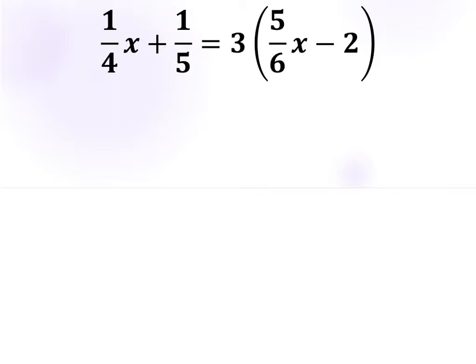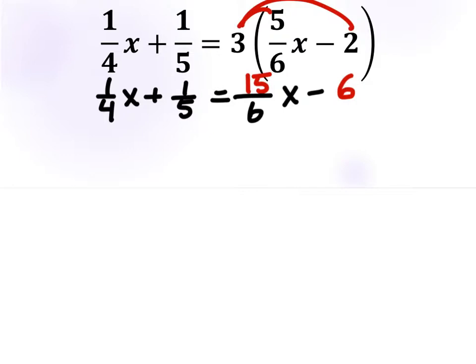The first thing we need to do in this problem is to distribute the three. I'm just going to use these distributive rainbows, which just indicate that we're multiplying here. And after distribution, of course, 3 times 5 is 15, and 3 times 2 is 6. Now we would consider this a negative 6, just because that was a minus, and that would have been considered a negative 2 term.